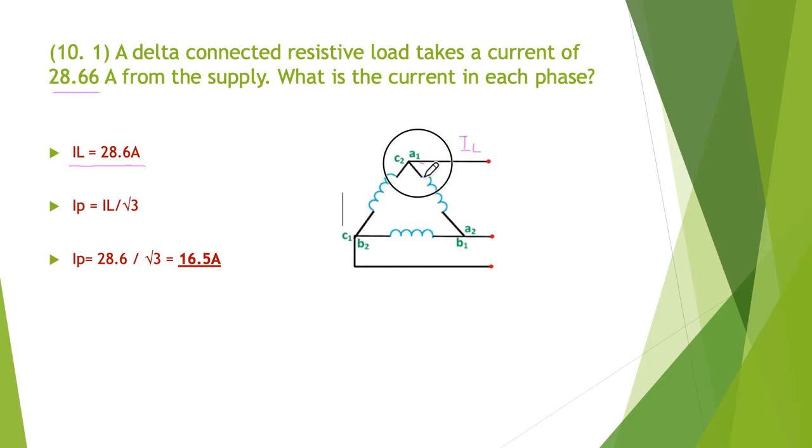But we've got to find the I phase and we know that the current breaks up as it comes through this node. And we know for I phase that there is this root three relationship. So I phase is equal to IL, the line, divided by root three. So in this particular case, we've got 28.6 we divide it by root three, giving us a nice simple 16.5 amps here in each of the phase windings.